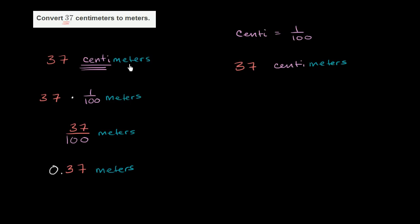So you would divide. This would be 3.7 decimeters. Let me write this as 3.7 decimeters. And a decimeter is one-tenth of a meter. So you would divide by 10 again. So this is 0.37 meters.